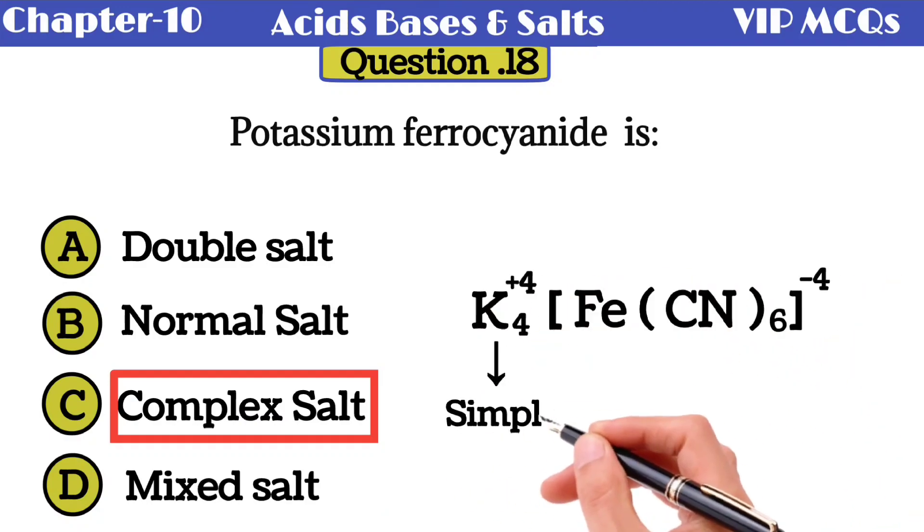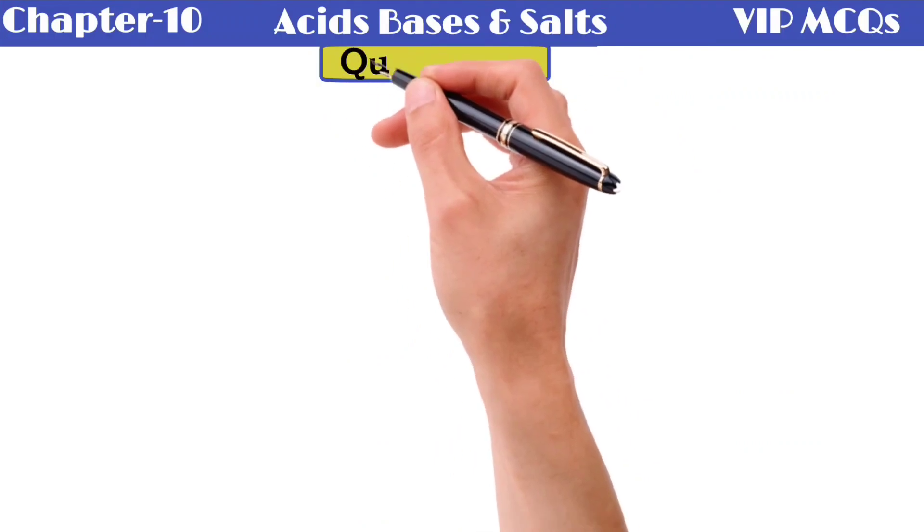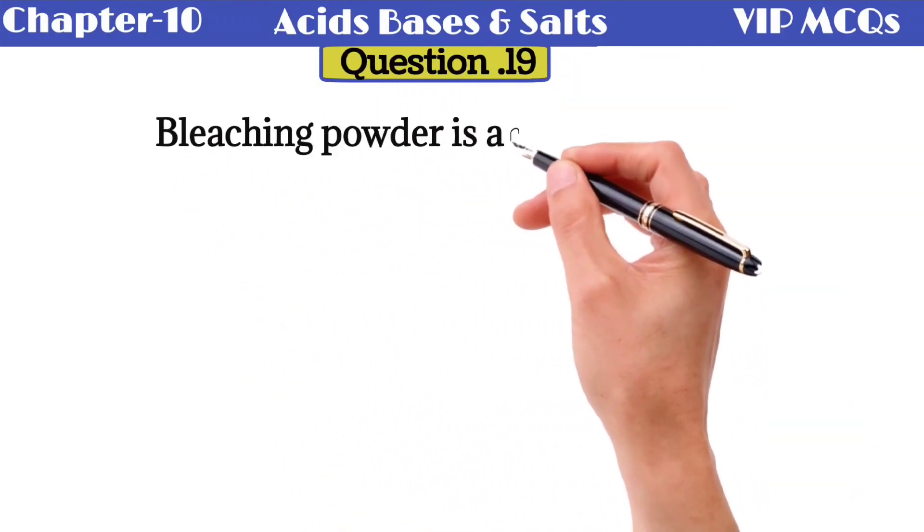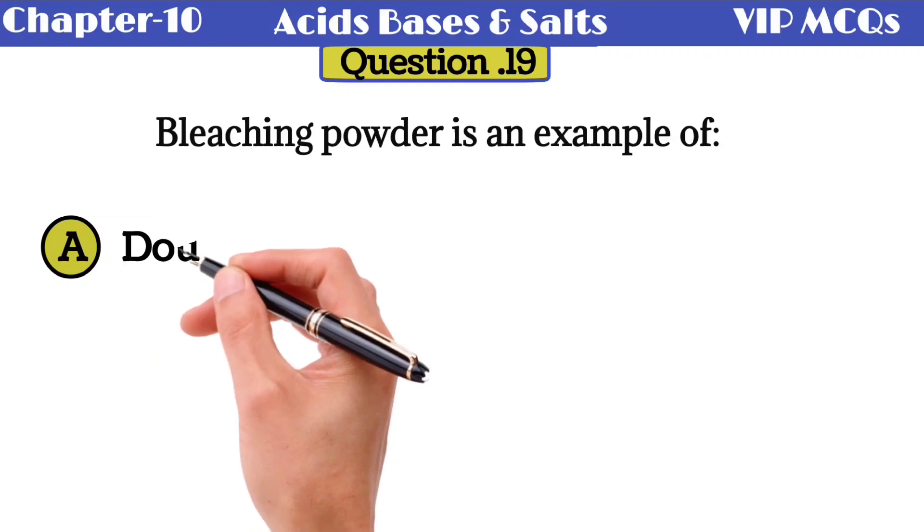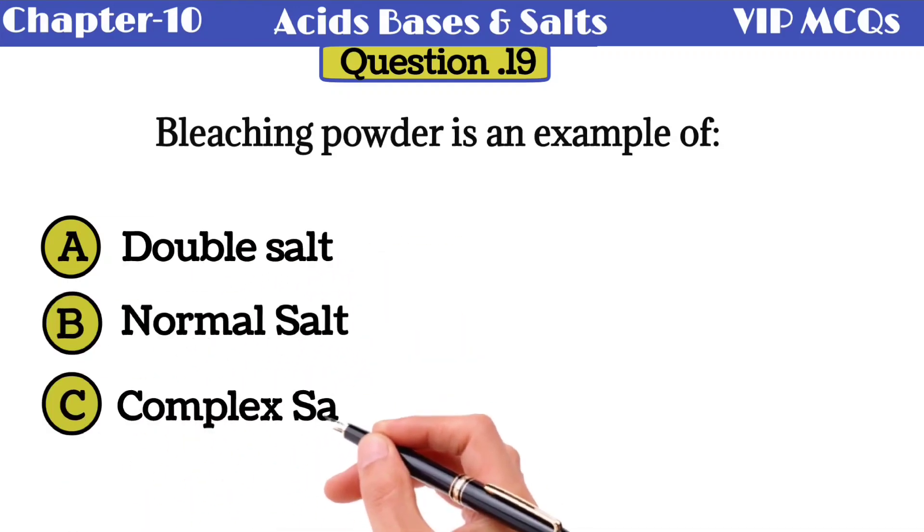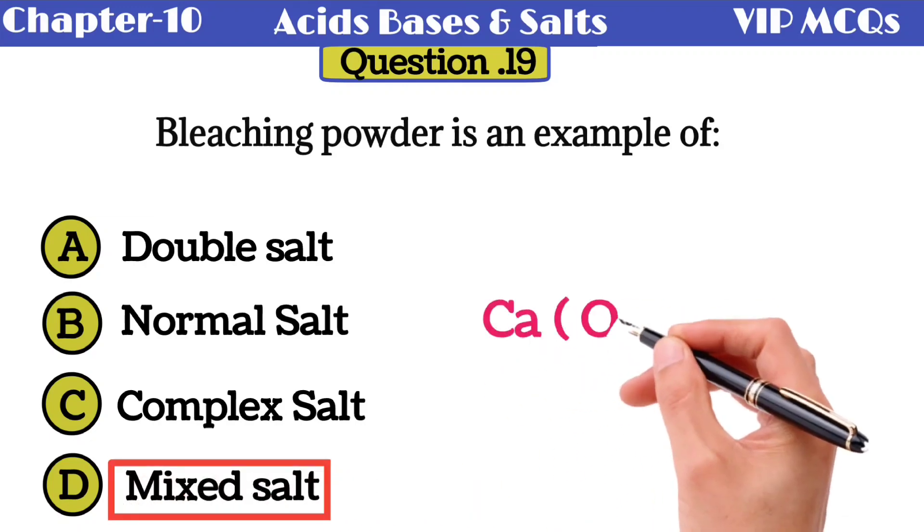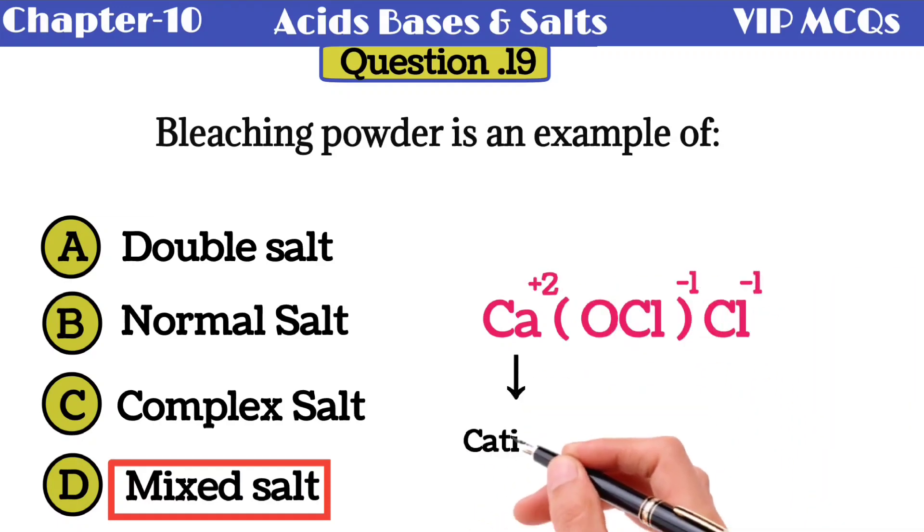Question 19: bleaching powder is an example of - option A double salt, option B normal salt, option C complex salt, option D mixed salt. Bleaching powder is an example of mixed salt. This is the chemical formula of bleaching powder, containing 1 cation and 2 anions. Such salts are known as mixed salts.